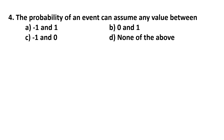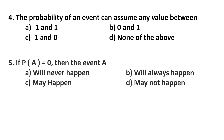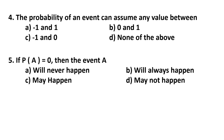Question 5. If probability of A is equal to 0, then event A will never happen, will always happen, may happen, or may not happen.